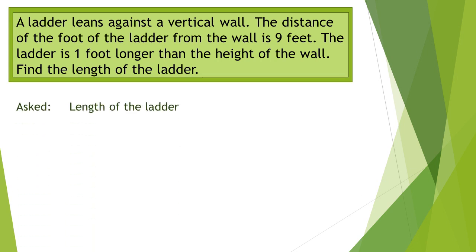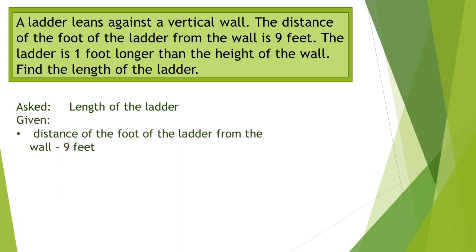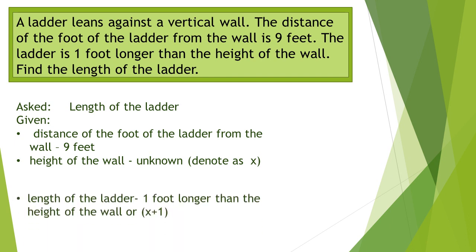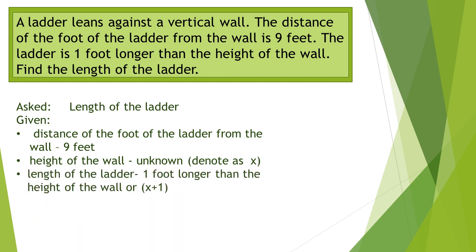The next thing we should do is identify the given. The given are: the distance of the foot of the ladder from the wall, which is 9 feet; the height of the wall, which is unknown, so we denote it as x; and the length of the ladder, which is 1 foot longer than the height of the wall, or x plus 1.